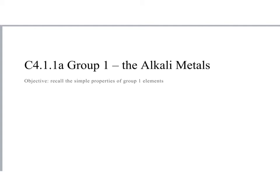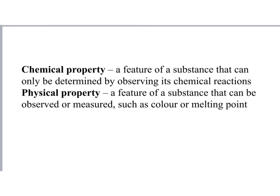I just want you to be able to recall some simple properties of these group 1 elements. There are two types of property: chemical properties and physical properties. A chemical property is to do with their chemical reactions - how it reacts, how quickly it reacts, what it reacts with. A physical property is something that can be observed or measured, like color, melting point, or density.